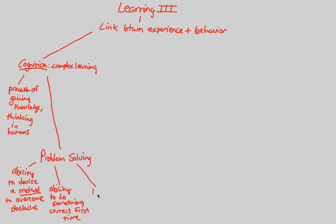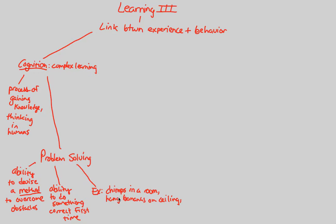A good example to understand problem-solving is the classic chimp example. Chimps are very smart, higher-order animals. Imagine you put chimps in a room — studies that have actually been done — and you hang bananas on the ceiling. You are creating a problem for these chimps: they want the food, but the food is out of reach.